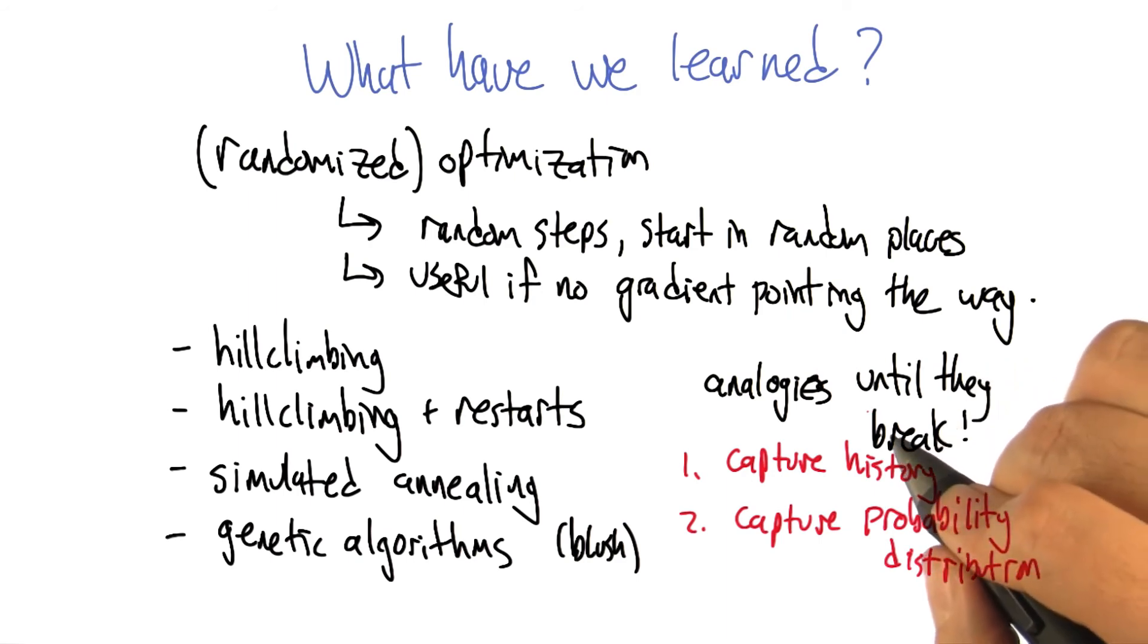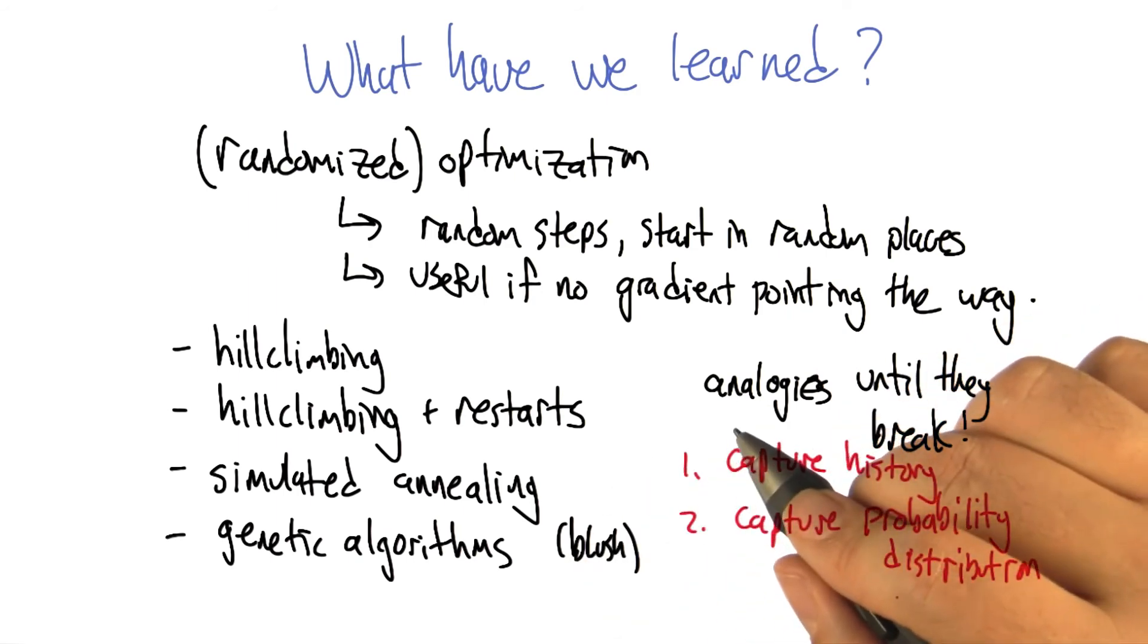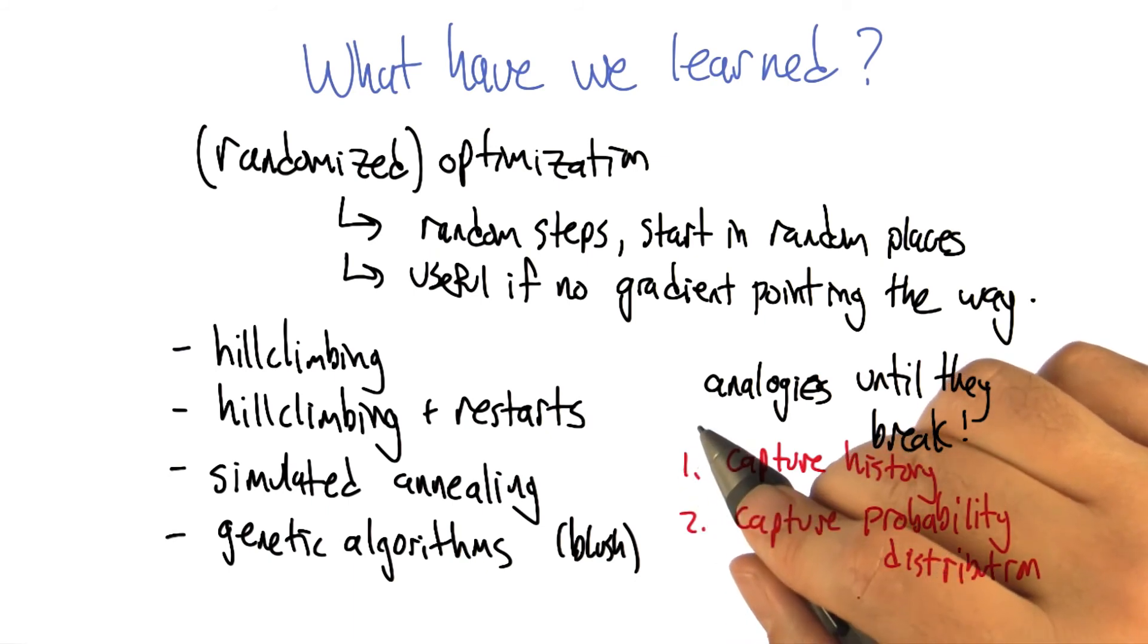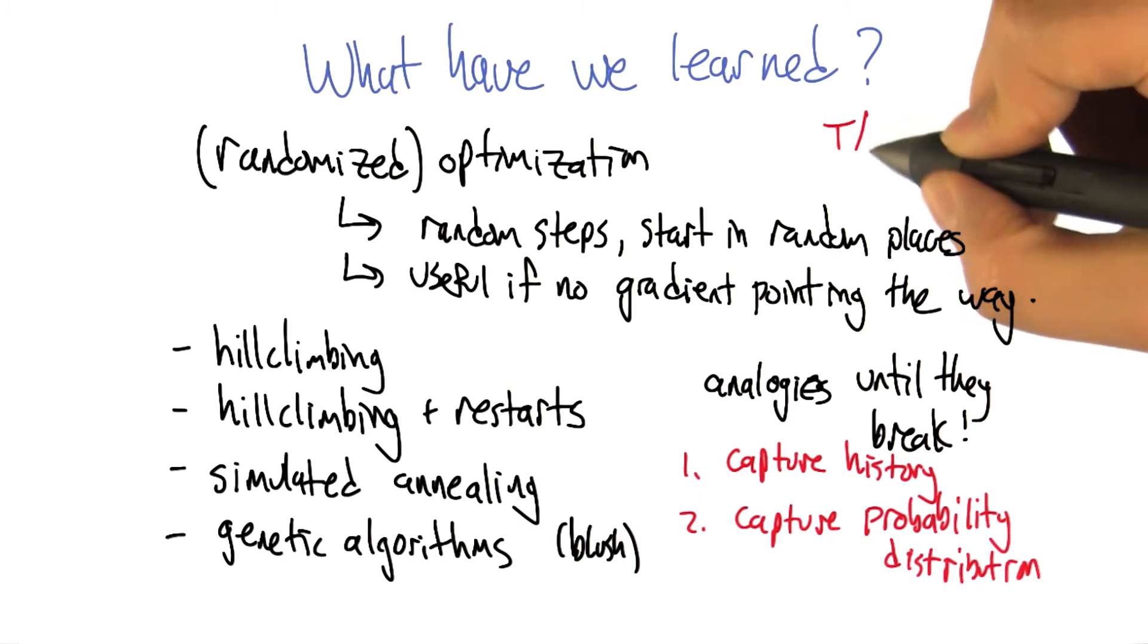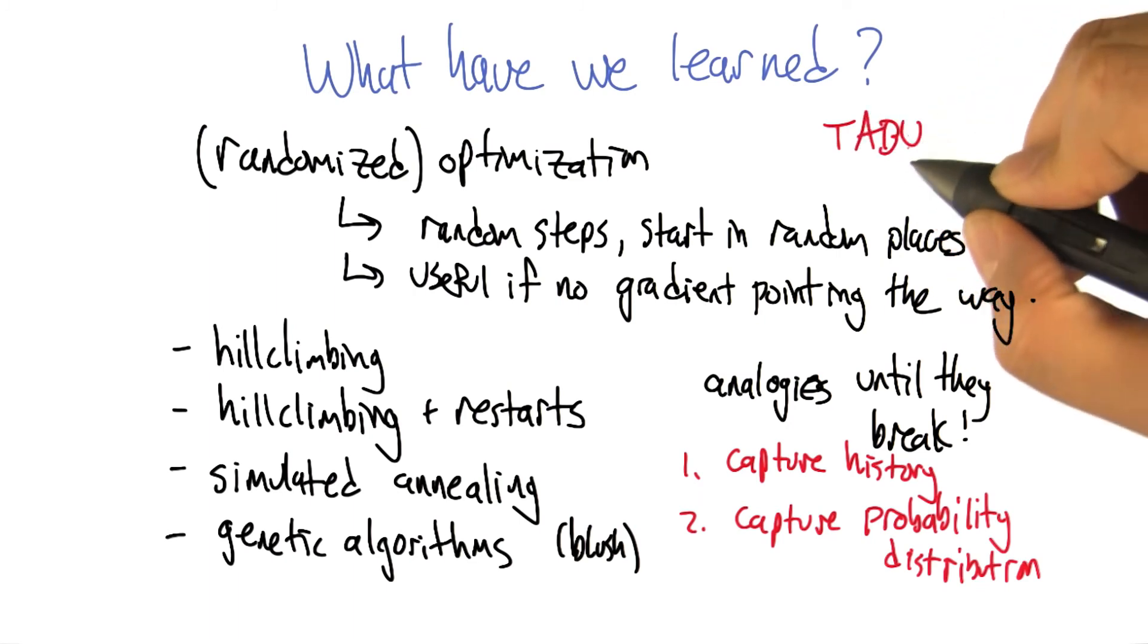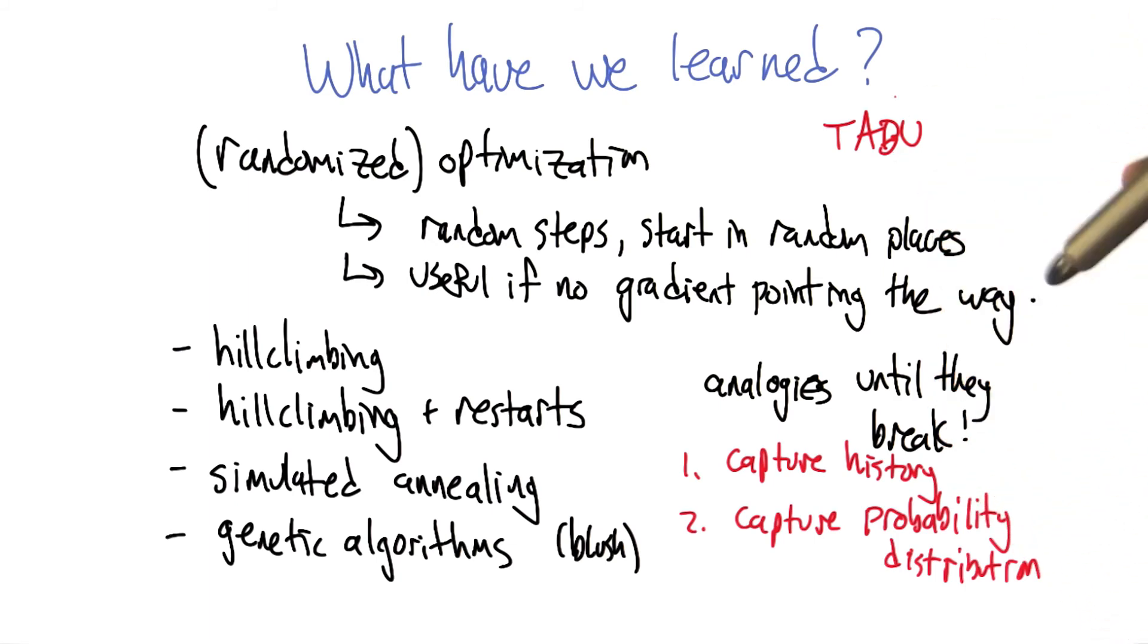There are some other algorithms that these are the kind of the simplest algorithms, but you can recombine these ideas, sort of crossover style, to get other more powerful algorithms. There's one that's called taboo search that specifically tries to remember where you've been and you're supposed to avoid it, right? These become taboo regions.